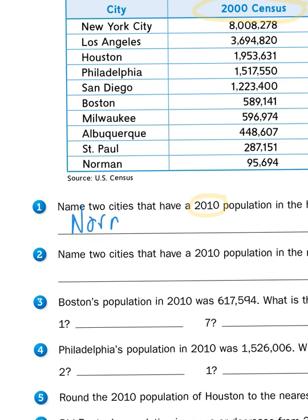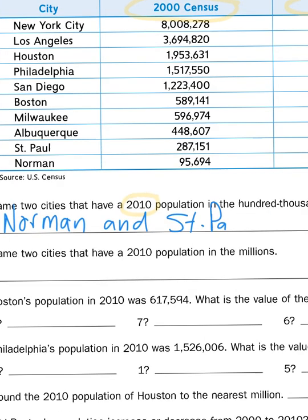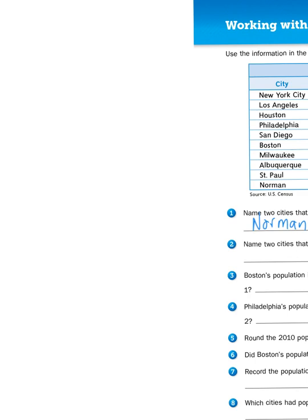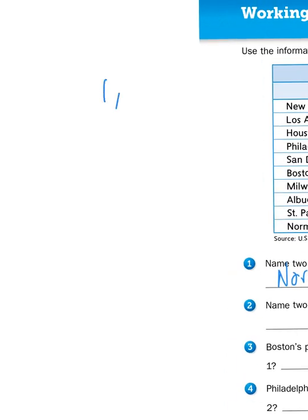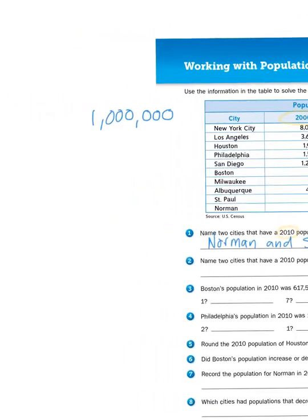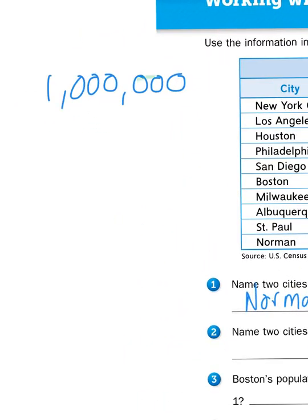So I would write that down in the space provided. The second question is: name two cities that have a 2010 population in the millions. A million is a number that has seven digits in it. If I write out the number one million, I have three digits in the ones place values — hundreds, tens, and ones — then three digits in the thousands place values: thousands, ten-thousands, and hundred-thousands. Then I get to one million.